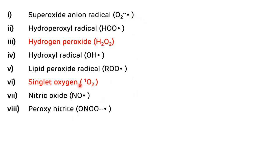Among all these, hydrogen peroxide and singlet oxygen are not free radicals because they are not represented by a superscript dot. They are included in reactive oxygen species because of their high reactivity. Among all free radicals, the hydroxyl radical is the strongest.